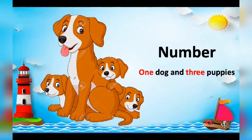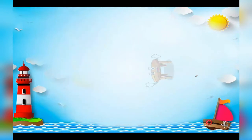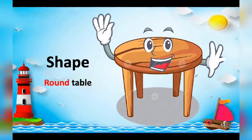One dog and three puppies — the words 'one' and 'three' describe the number of dogs and puppies, so 'one' and 'three' are adjectives because they tell us how many there are. Here we also have a round table — the word 'round' describes the shape of the table, so 'round' is an adjective.